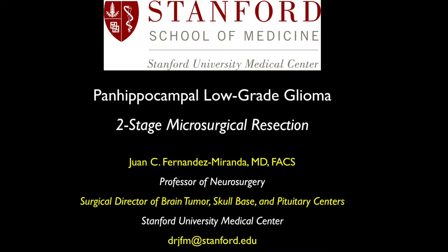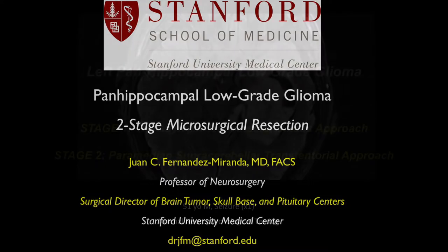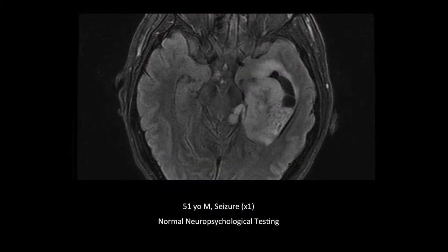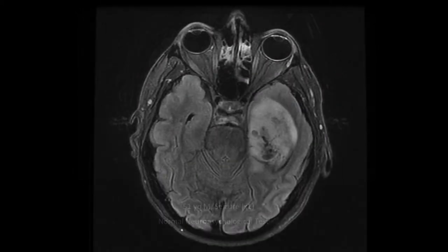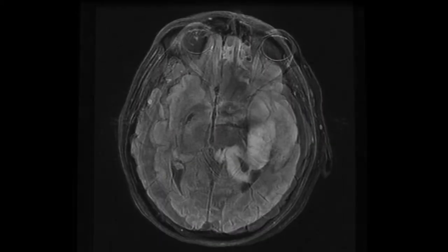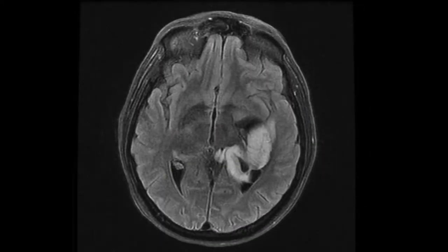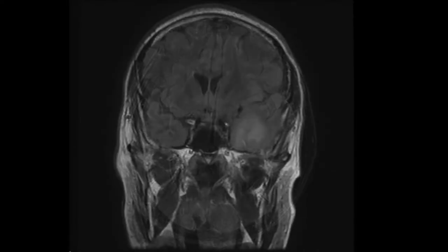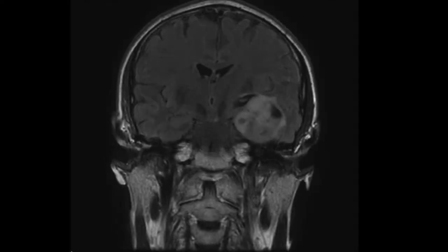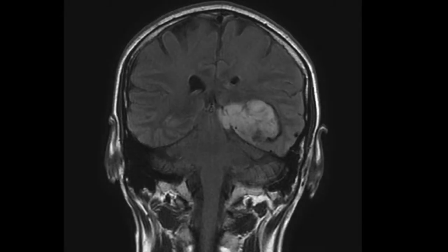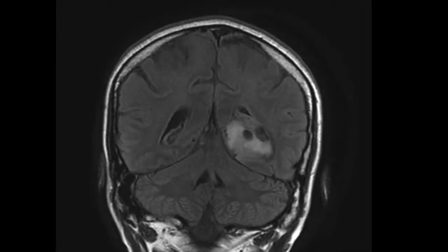Here we present the surgical case of a left pan-hippocampal low-grade glioma that was done in two separate stages. The patient is a 51-year-old male that presented with a seizure. He has a large mass involving the hippocampus all the way from the head of the hippocampus and uncus to the body and then the tail of the hippocampus.